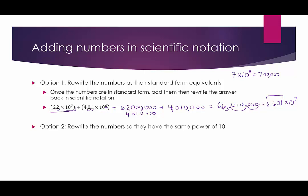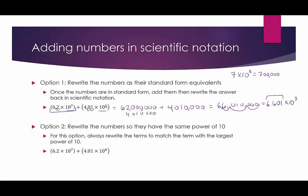Option two — that was a lot of work. Instead, we can rewrite the numbers so they have the same power of 10. It's important to always match the term that has the largest power of 10. In that previous example, 7 is bigger than 6, so we rewrite the second term to have 10 to the seventh. Since these two factors are multiplied together, if one factor increases by a power of 10, we must divide the other factor by that same power to keep things balanced.